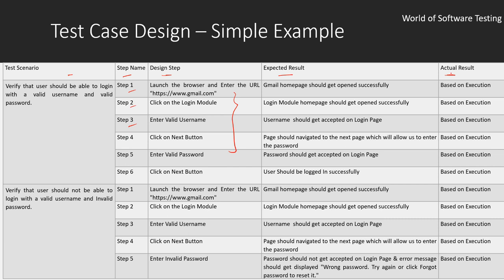For the first scenario — verify that user should be able to login with valid username and valid password — the design steps are: step 1, launch the browser and enter the URL gmail.com; the expected result is that the Gmail home page should open successfully. Then click on the login module; the login module home page should open successfully. Then enter the valid username; it should get accepted on the login page. Then click the next button; the page should navigate to allow entering the password.